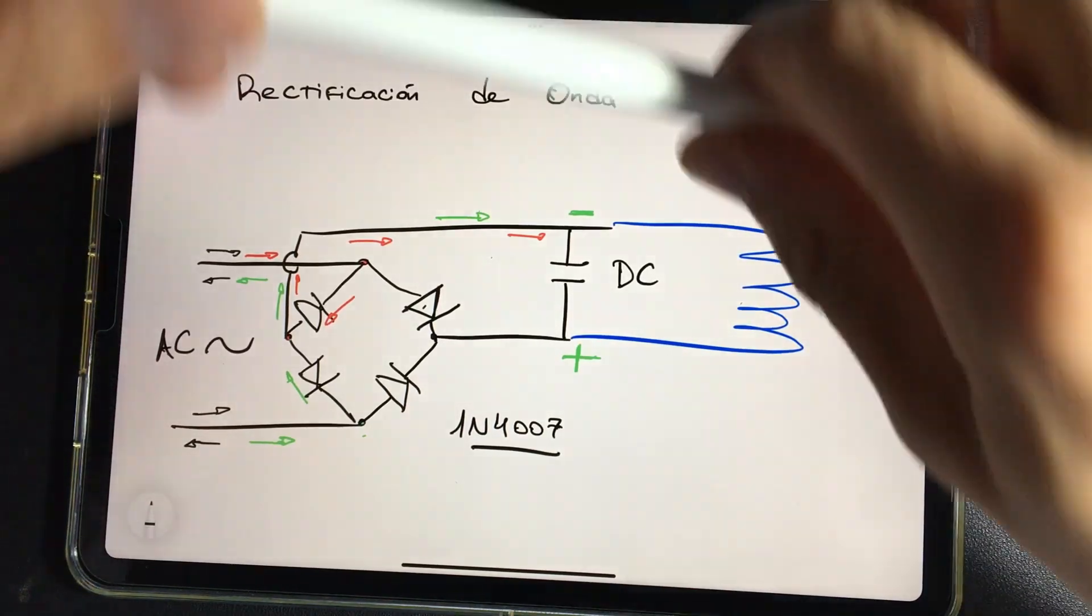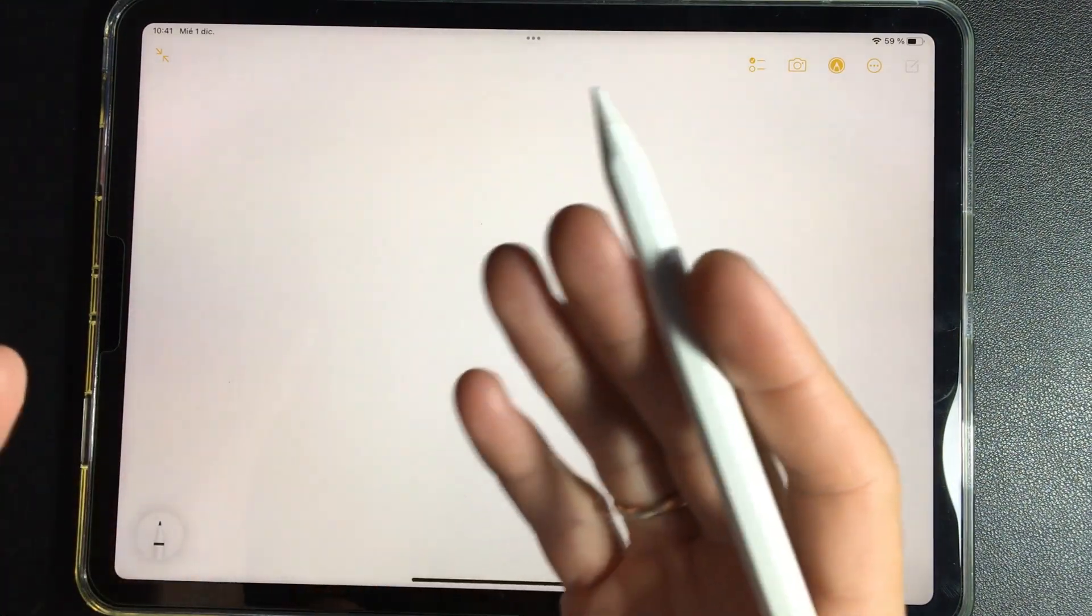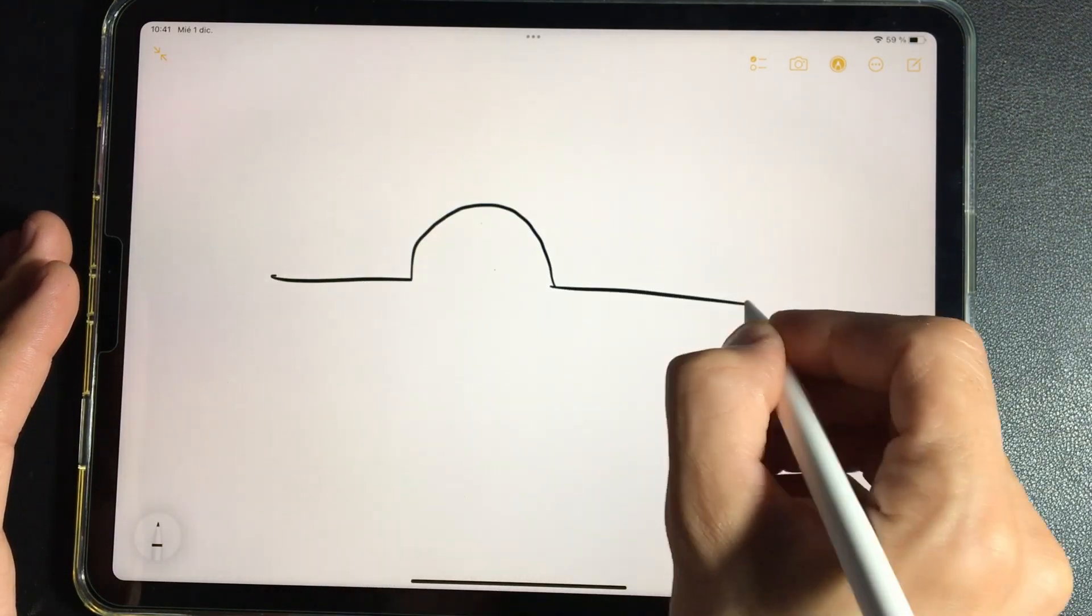Going on to the next topic, we're going to explain how a capacitor works. If we compare a capacitor to a water circuit, it would be something like the following.